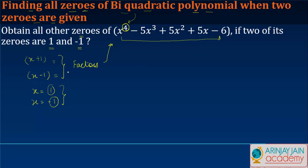In that case, if we divide this polynomial by (x + 1) and (x - 1), what we will get is the remaining part of the polynomial, and then we can factorize it to get the other zeros. Now (x + 1) and (x - 1) can be written as x^2 - 1.